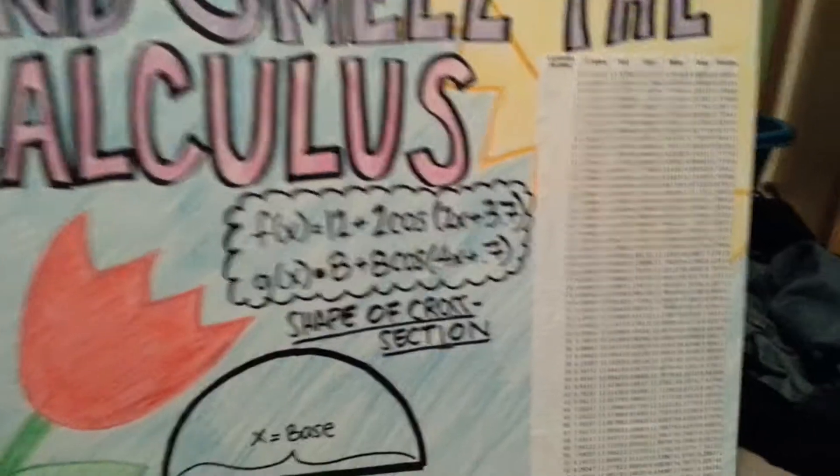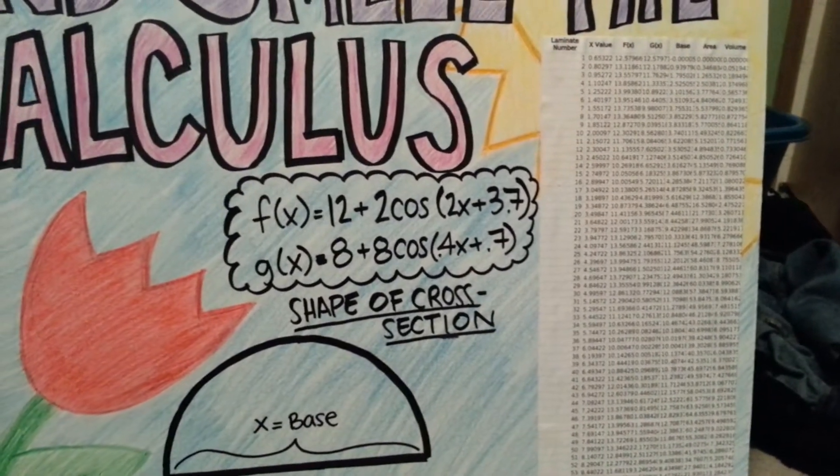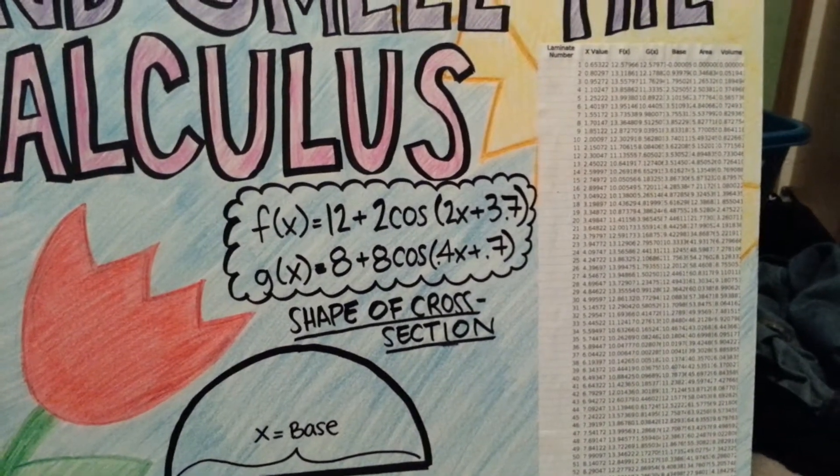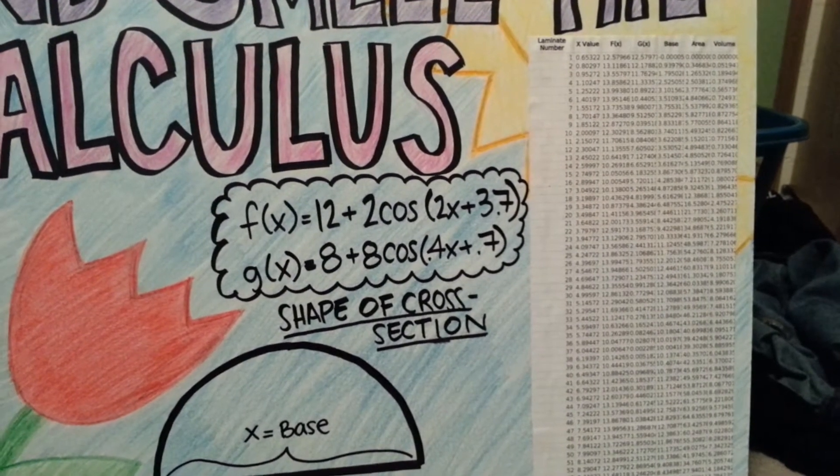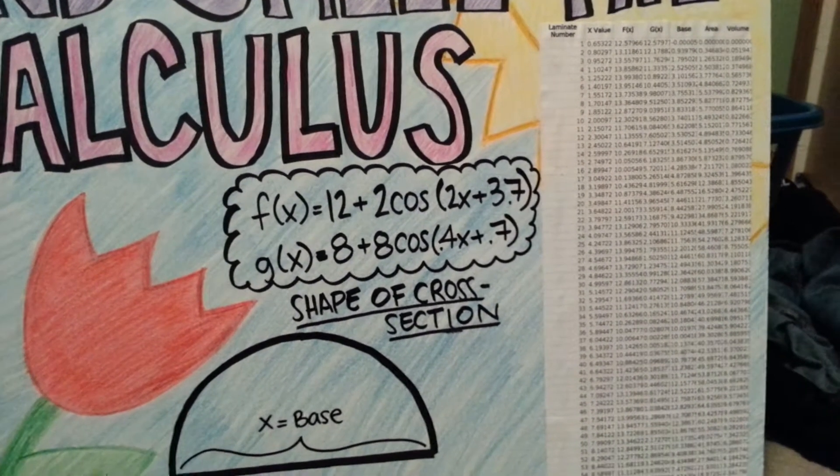The functions that I used were f of x equals 12 plus 2 cosine 2x plus 3.7, and g of x equals 8 plus 8 cosine .4x plus .7.